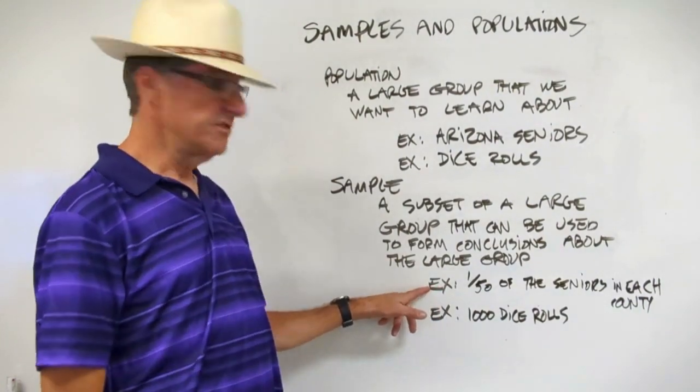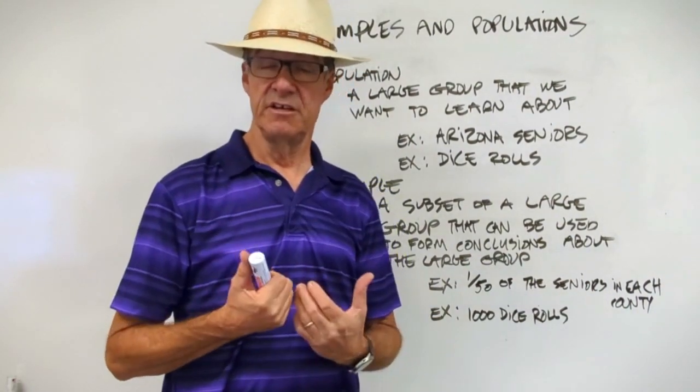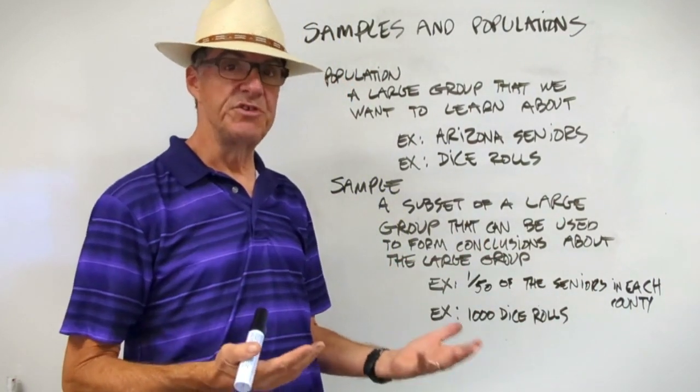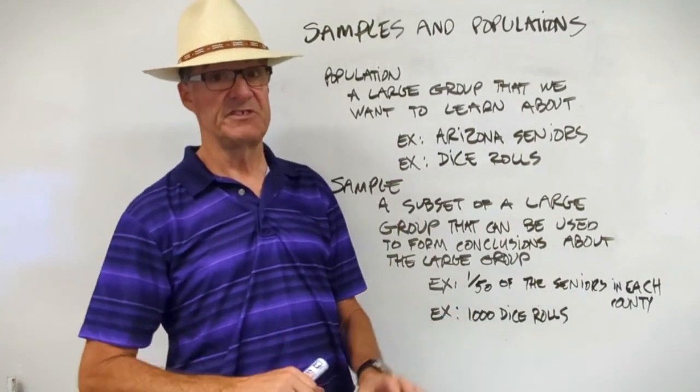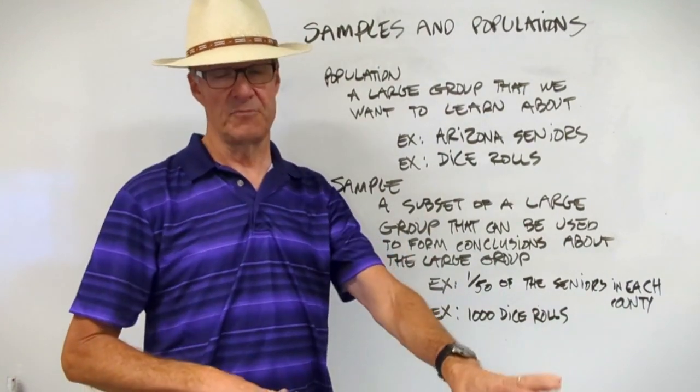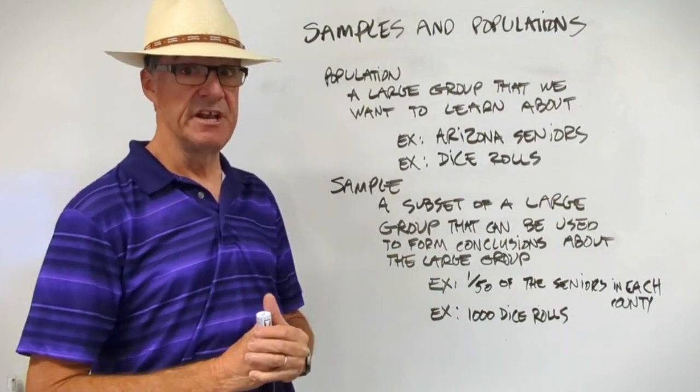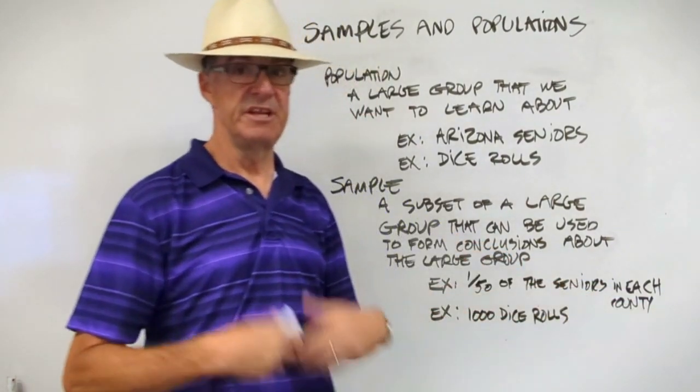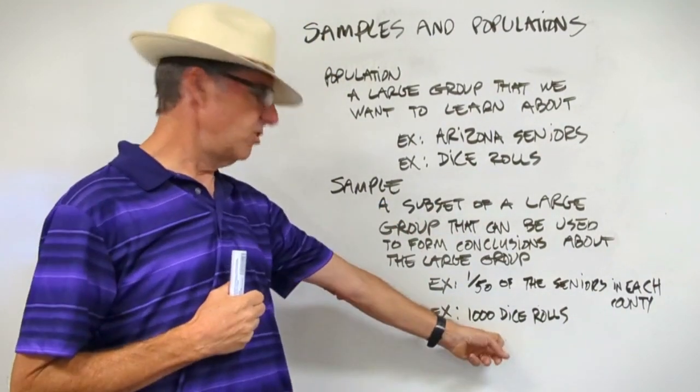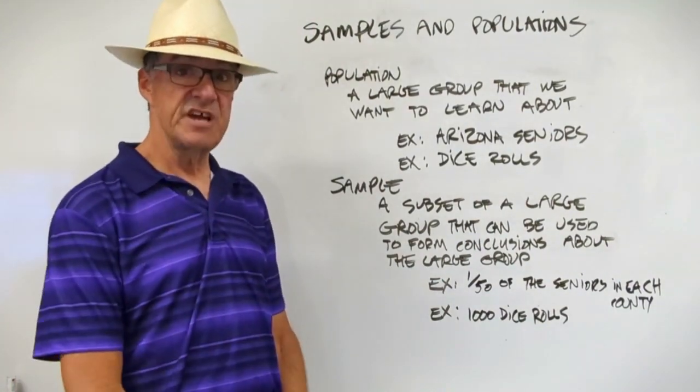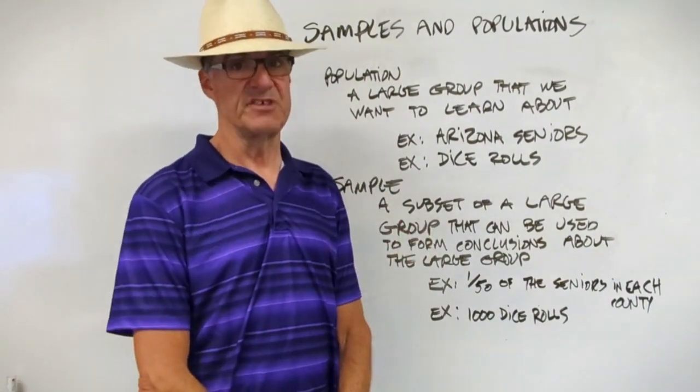Let's see how you did. So what I wrote here for the seniors is I just wrote 1/50th of the seniors in each county. So that gives us a good geographical distribution of all the seniors in Arizona because seniors in Maricopa County might feel differently than seniors in Coconino or in Yavapai County. Now, in reality, we're going to do a lot more to make sure our seniors are representative because there's a lot more characteristics of seniors that we need to account for. Dice rolls. We want to know about any dice roll on the planet. Let's roll the dice a thousand times. A thousand dice rolls is our sample for the larger population of any possible dice roll ever.